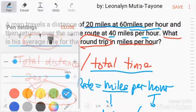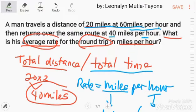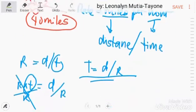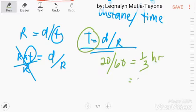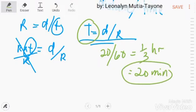Ngayon, dito tayo sa unang travel mo. 20 miles at 60 miles per hour. Time ang hanapin mo. Ang distance mo is 20 miles. Over, ang rate mo ay 60 miles per hour. And that is one third hour or 20 minutes. Yan na yun, ang una natin.